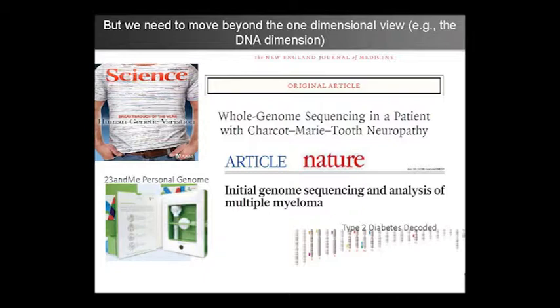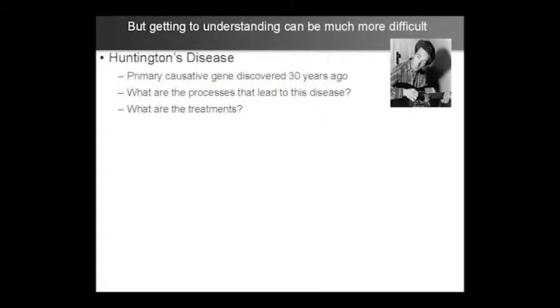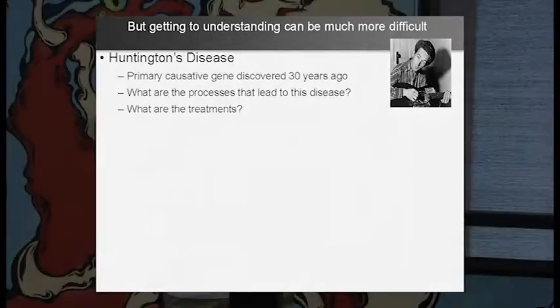What I was showing was the DNA difference between groups. The message I want to take home today is that DNA is just one of those dimensions we can use to explain group differences. It's an important dimension — as we've seen with Huntington's disease. But the problem with Huntington's is that even though the disease-causing mutation was discovered 30 years ago, that knowledge didn't give us understanding. Thirty years later we still don't have a cure, still don't know how it progresses, and still don't have effective treatments.